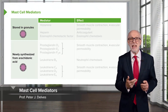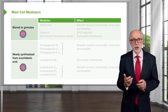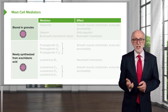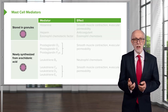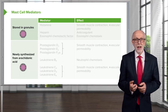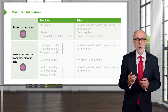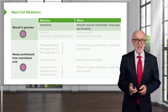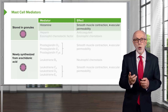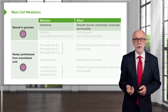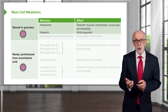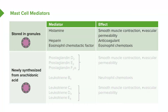Mast cells produce mediators that contribute towards the inflammatory process, divided into two groups: ones already made and stored within granules, and newly synthesized mediators made from arachidonic acid. Histamine is the classical mast cell inflammatory mediator — it causes smooth muscle contraction and an increase in vascular permeability. Heparin is stored in granules and is an anticoagulant. Eosinophil chemotactic factor is a premade mediator that mediates eosinophil chemotaxis. All these substances are ready to go the second the mast cell degranulates.